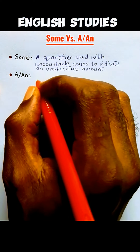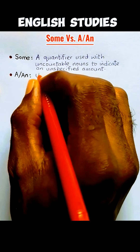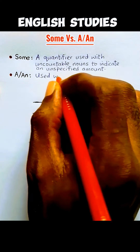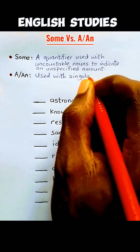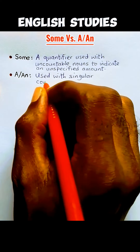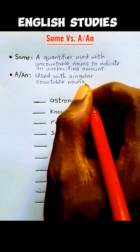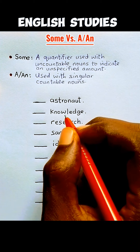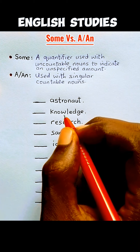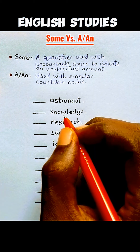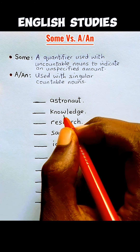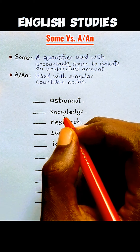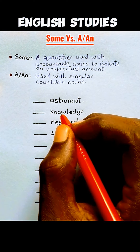The articles 'a' and 'an' are used with singular countable nouns. Use 'a' if the noun is singular and begins with a consonant sound. Use 'an' if the noun is singular and begins with a vowel sound. Having learned these rules, let us see which of them should go before the following words.